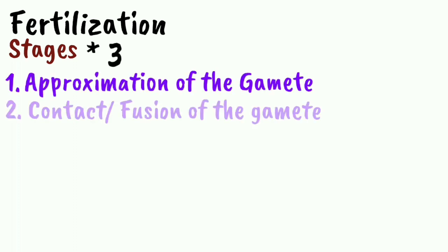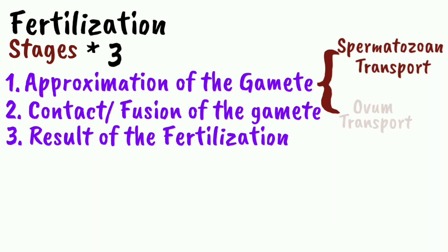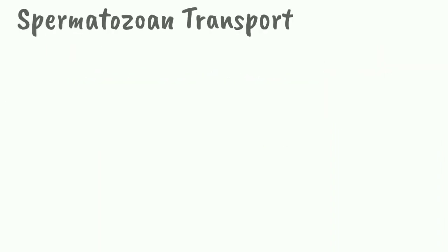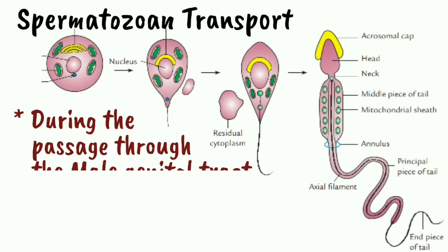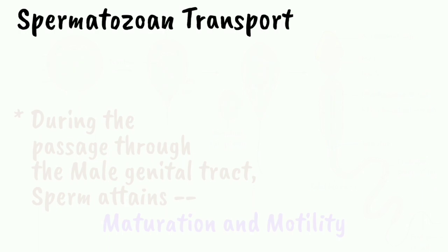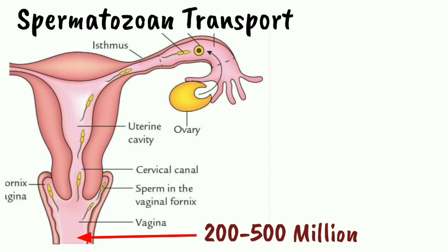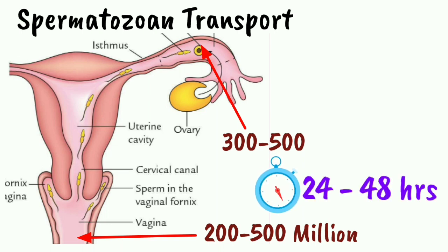The various events of fertilization can be discussed under three stages: first is the approximation of the gametes, second is the contact and fusion of the gametes, and third is the result of fertilization. Approximation includes spermatozoan transport and ovum transport. The seminal fluid contains the spermatozoa, and during passage through the male genital tract the spermatozoa obtain maturity and motility. Out of 200 to 500 million sperms deposited in the female genital tract, only 300 to 500 reach the site of fertilization. The lifespan of the sperm after ejaculation is 24 to 48 hours.